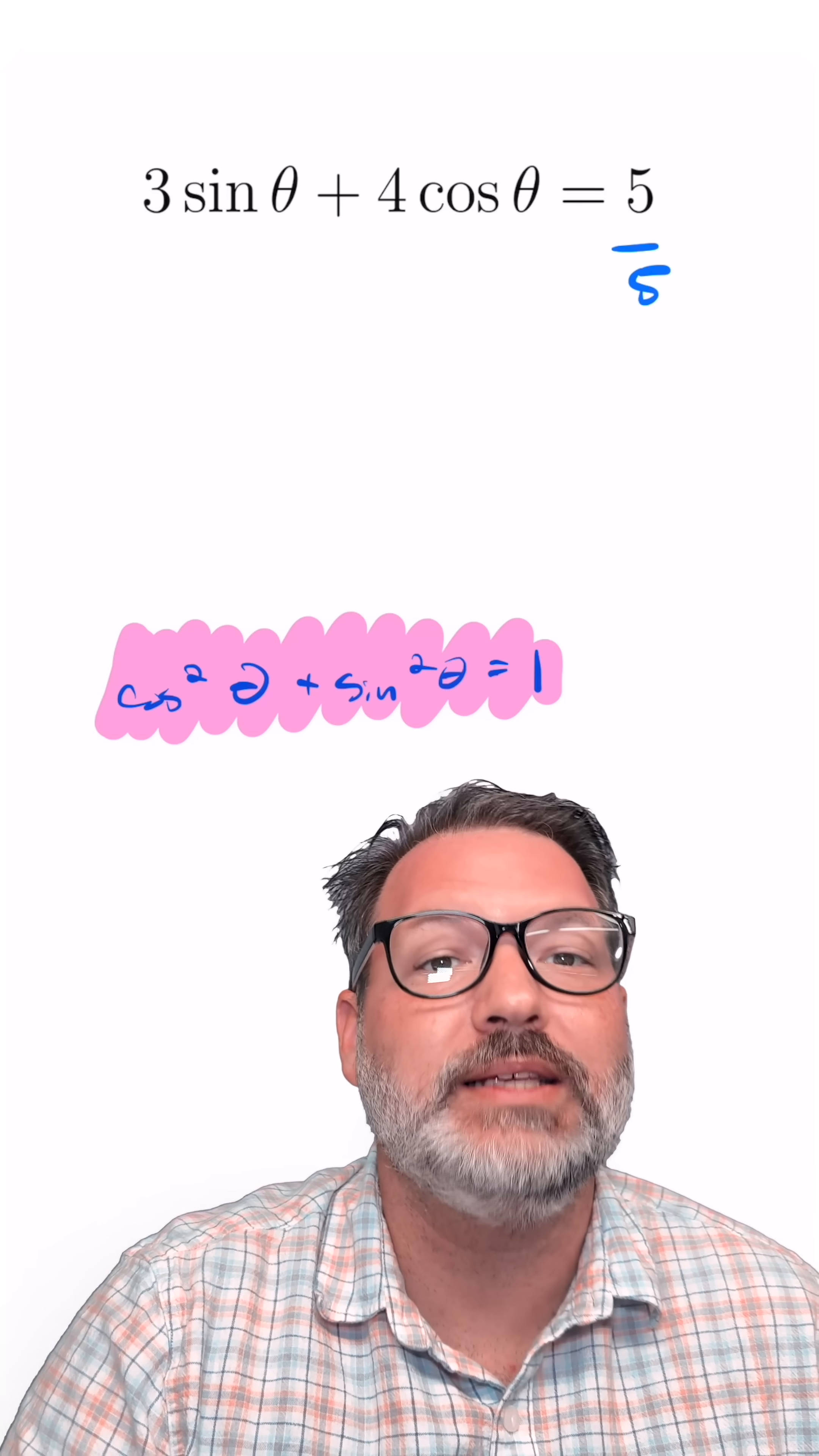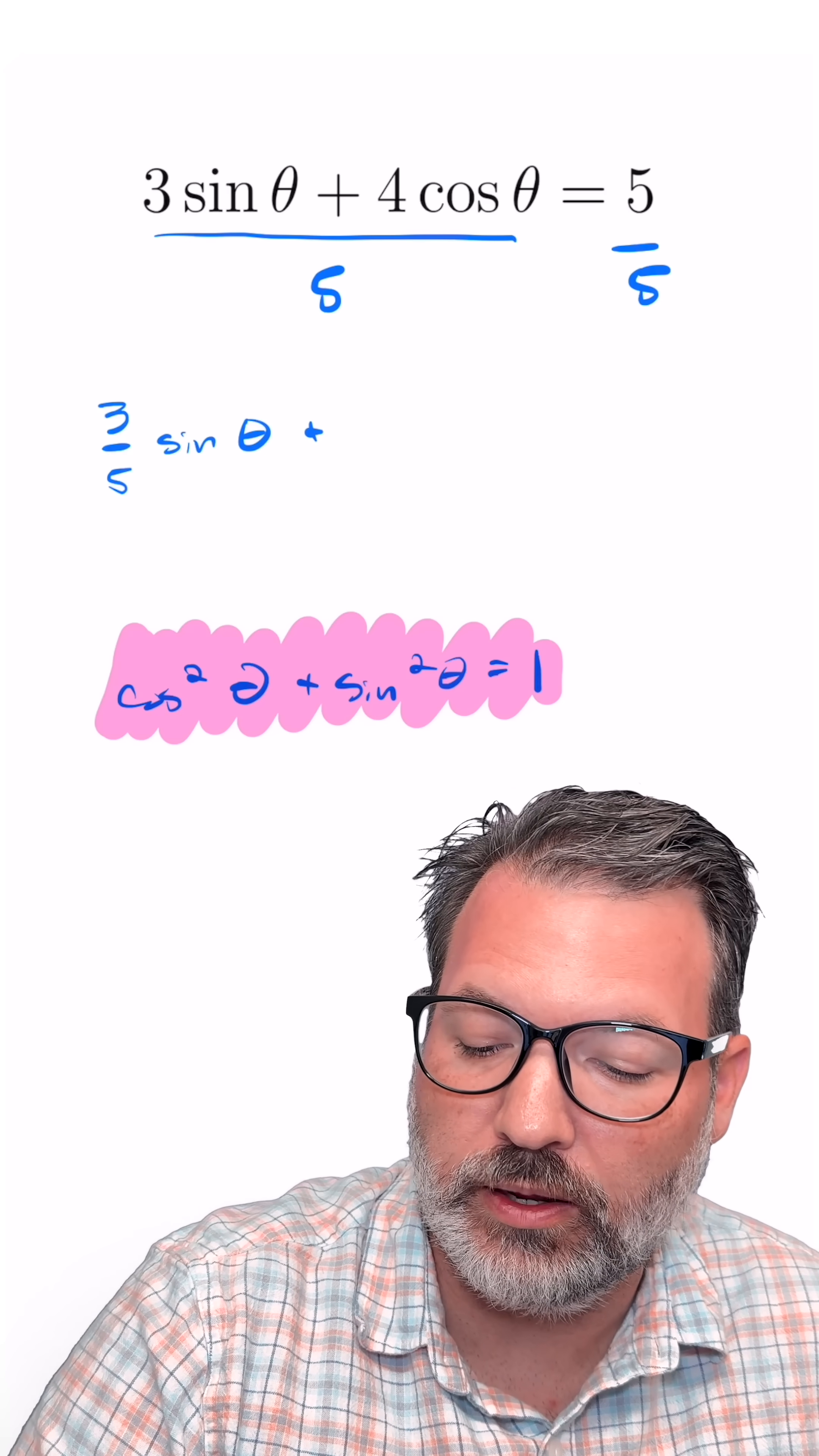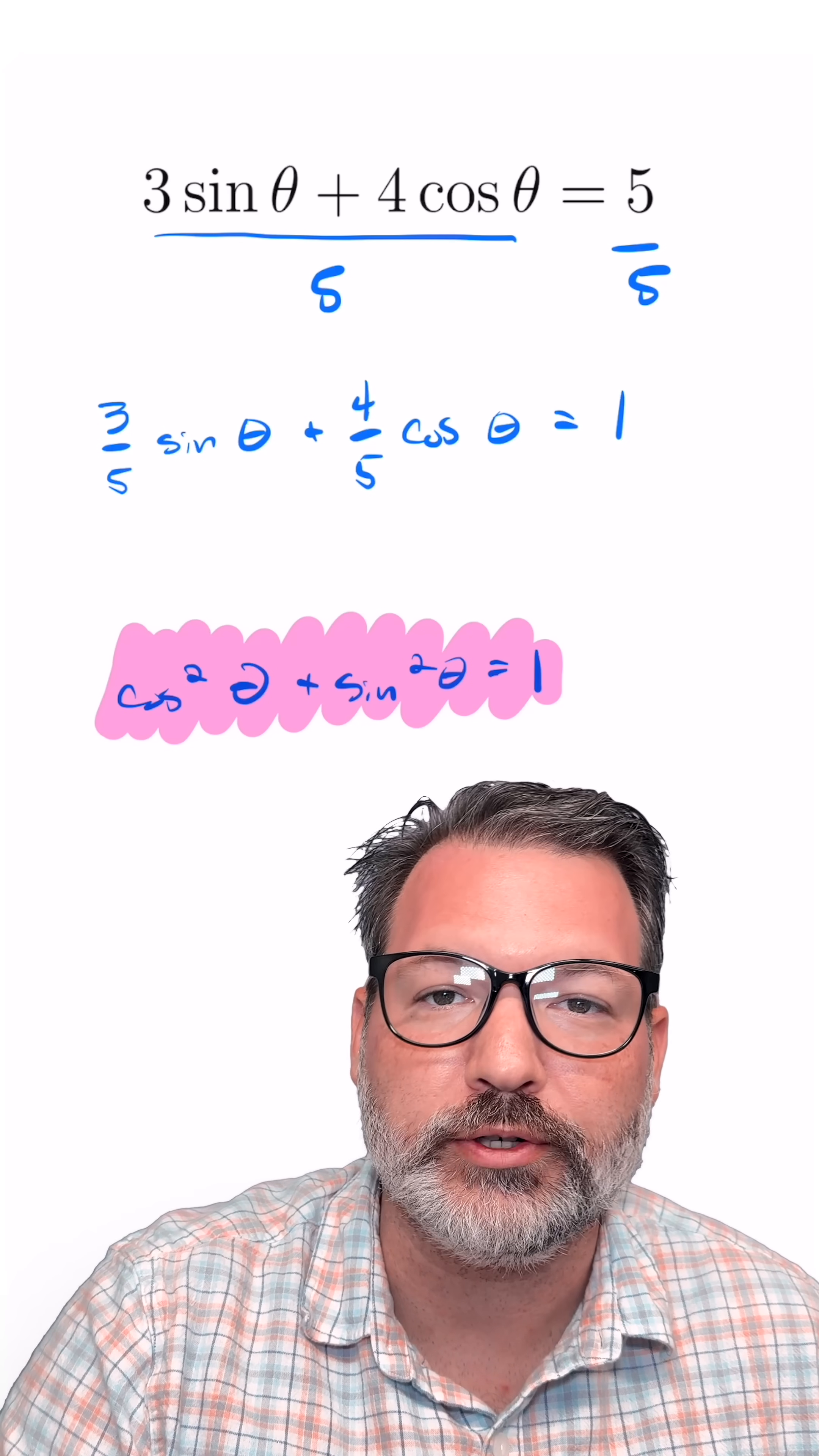Dividing 3 by 5, we're just going to call 3 fifths. So we have 3 fifths sine theta plus, similarly, 4 fifths cosine of theta. And again, we've succeeded at getting a 1 on that other side.